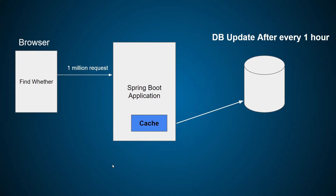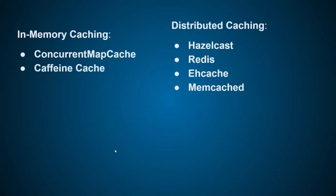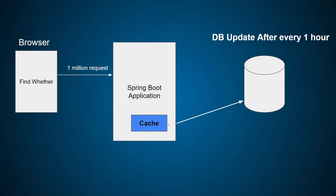Now let's understand the types of cache. There are two types: one is in-memory cache and another is distributed cache. In-memory cache means we create the cache inside the Spring Boot application itself. This is very fast because the cache is inside the application. The problem is if the Spring Boot application goes down, the cache will get cleared totally. That's the disadvantage, but the advantage is the performance is very high.